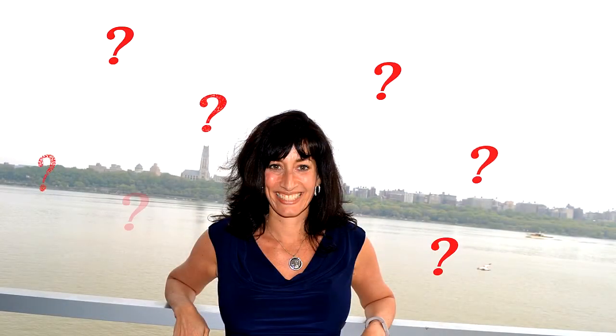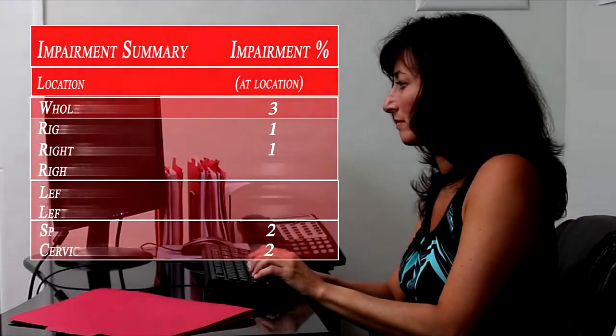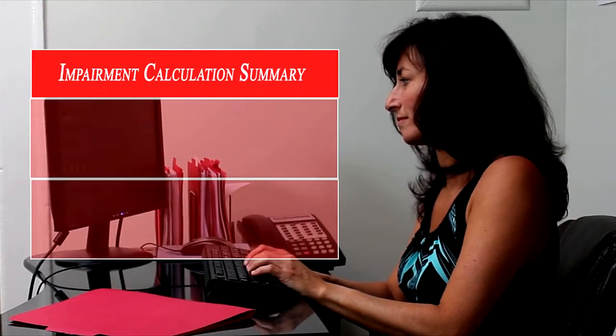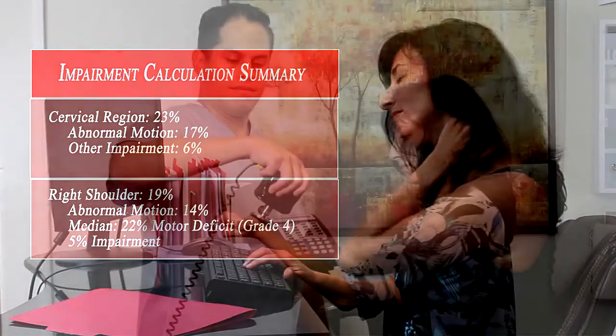So what does all this information mean to our patient Emma? Let's review. The whole person and local impairments reveal that Emma has a 38% decrease of her ability to perform her activities of daily living.